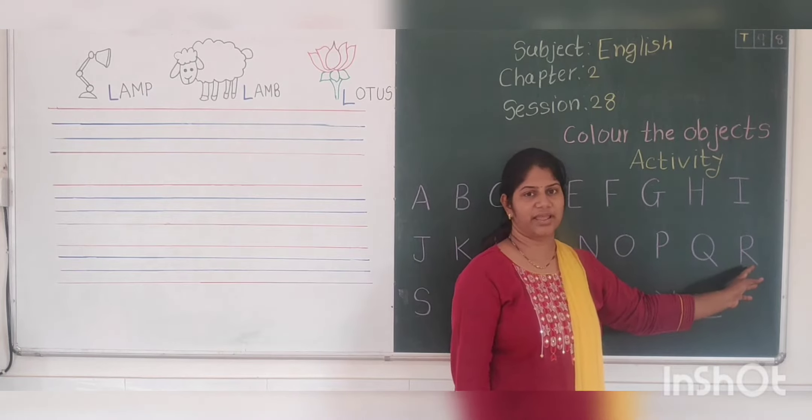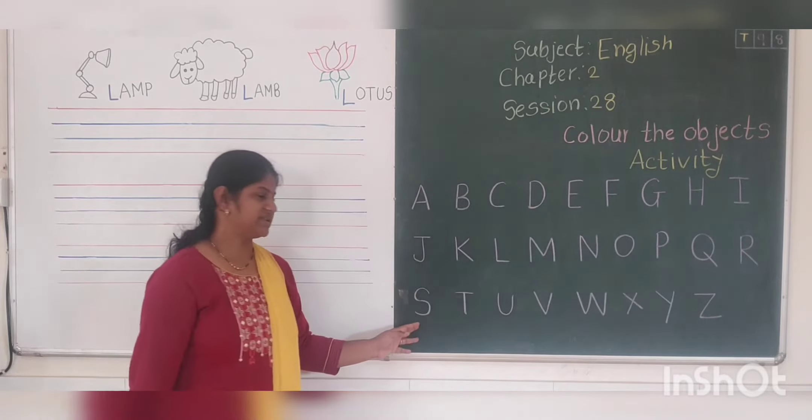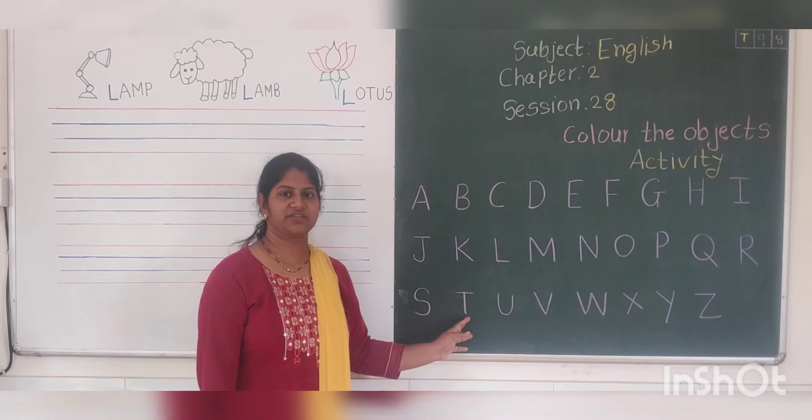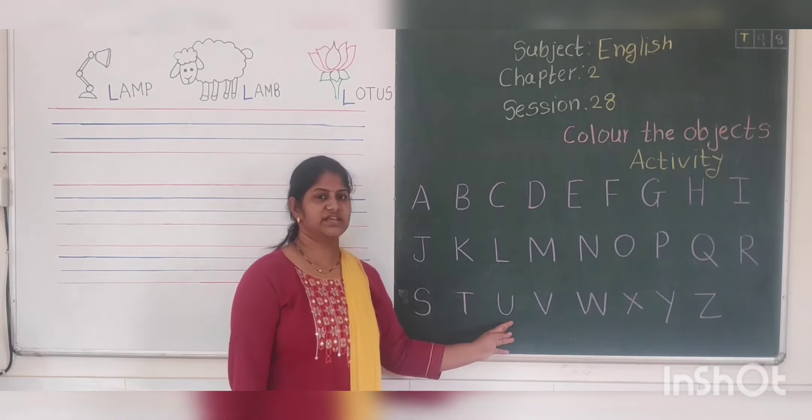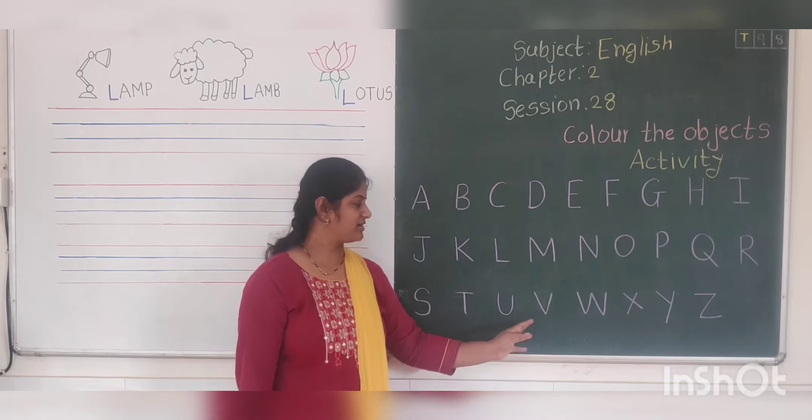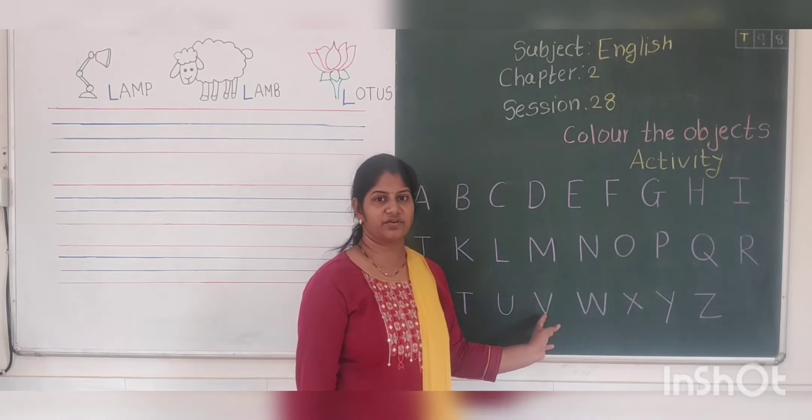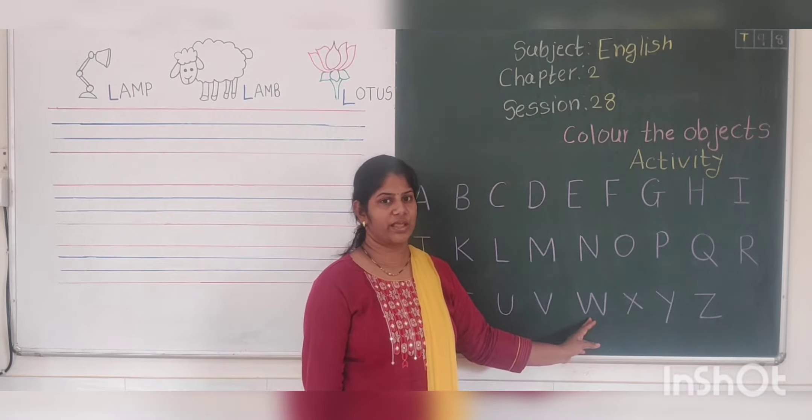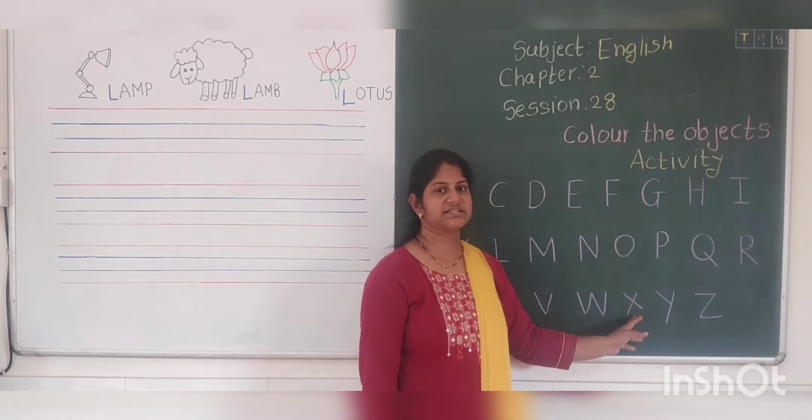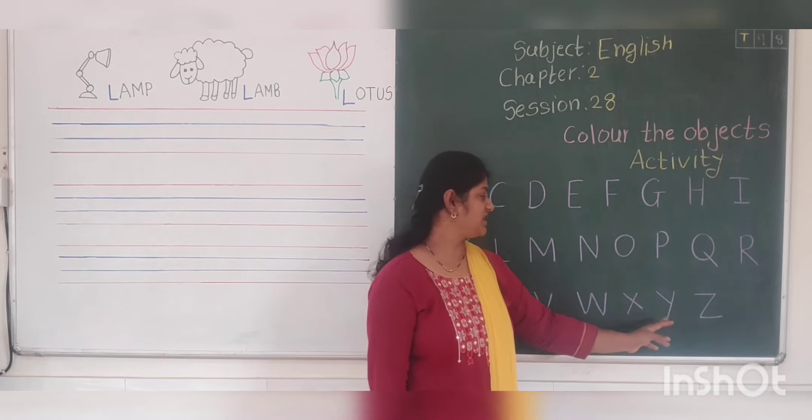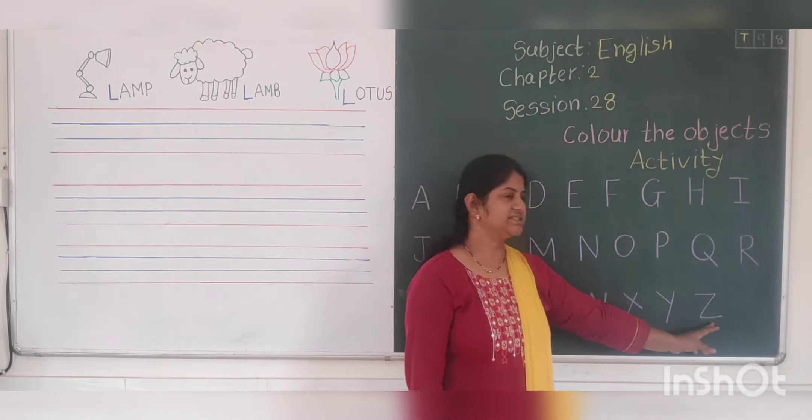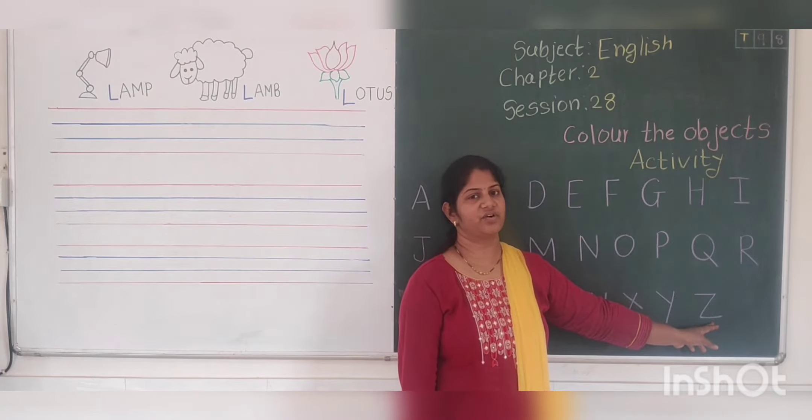R says R, R for rabbit. S says S, S for snake. T says T, T for tiger. U says U, U for umbrella. V says V, V for van. W says W, W for well. X says X, X for xylophone. Y says Y, Y for yak. And Z says Z, Z for zebra.